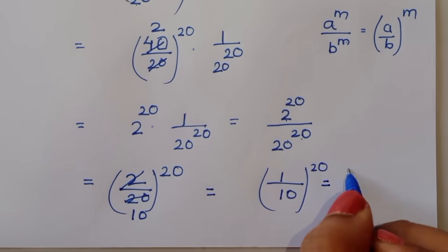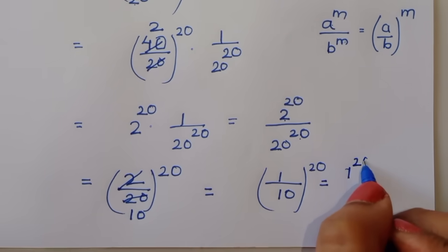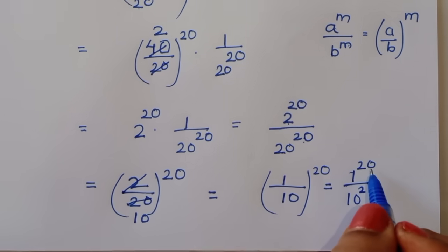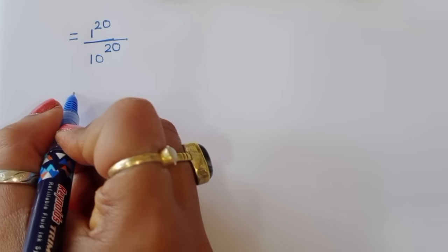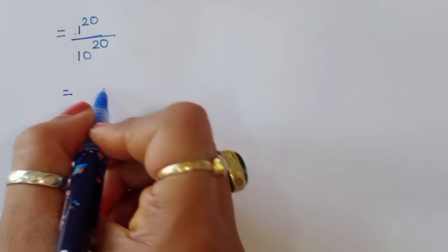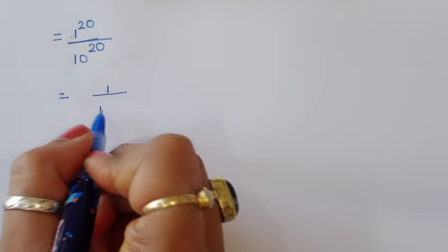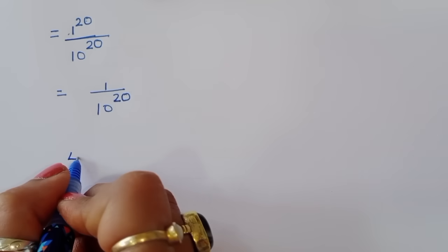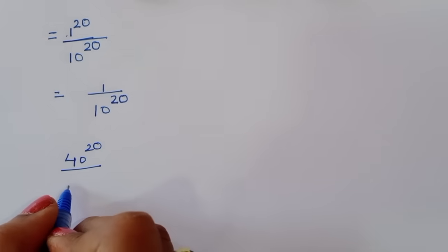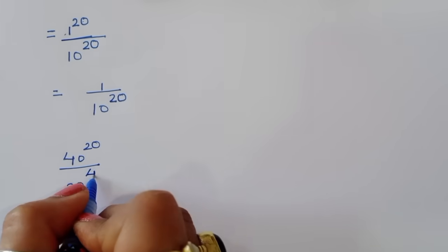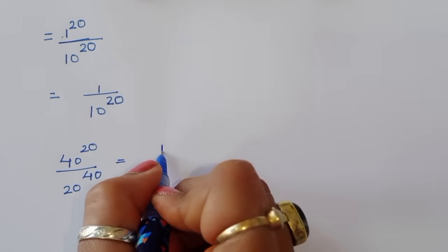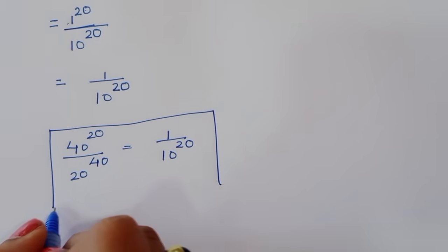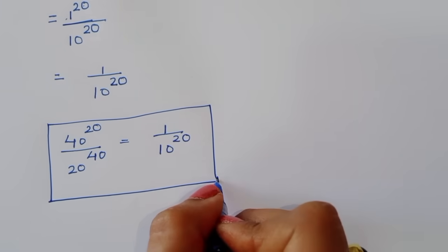Separating this term: 1 power 20 divided by 10 power 20. Since 1 power 20 equals 1, the result is 1 upon 10 power 20. So we can say 40 power 20 divided by 20 power 40 is equal to 1 upon 10 power 20. This is the first method.